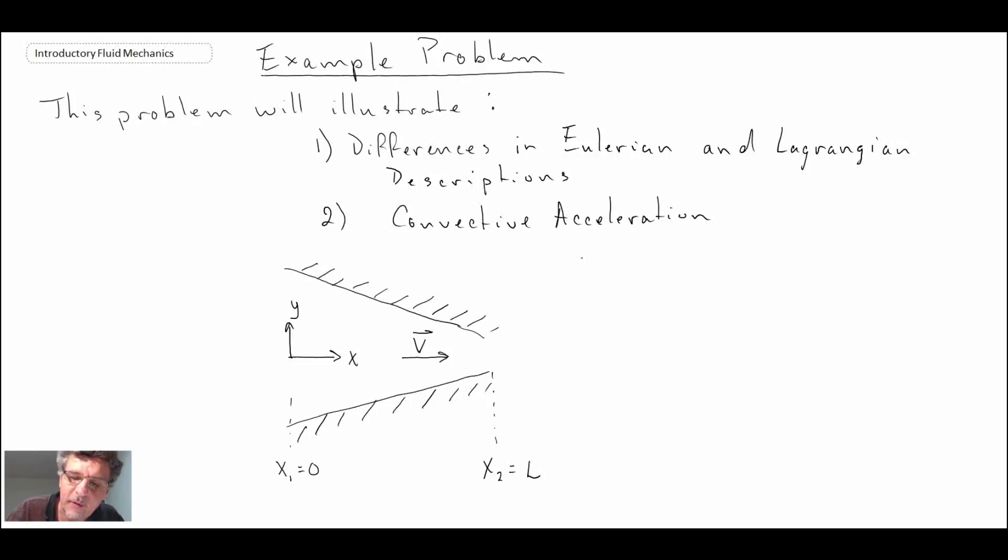What we are given in this problem is the velocity in the nozzle. We can note a couple of things. This is a steady flow and the reason we know that is none of the terms are time dependent. So the velocity is not changing as a function of time.